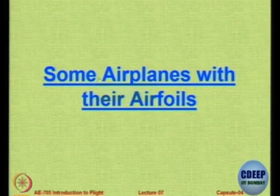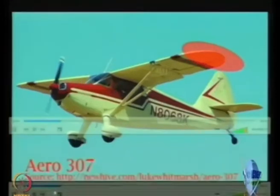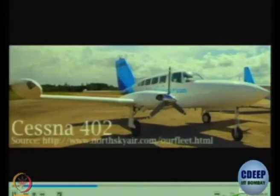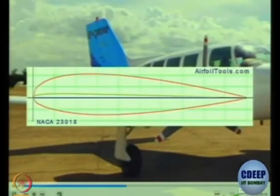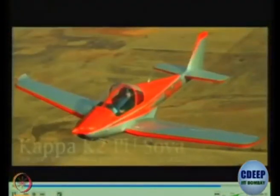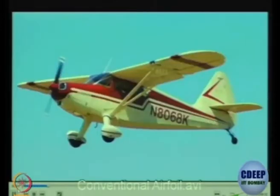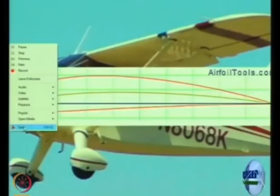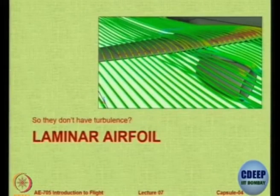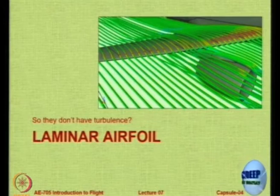Let us take a small look at some airplanes and their aerofoils. This is a video showing a few conventional aircraft — the NACA 5-series 23018, Italian Aermacchi, NACA 6-series, a popular aircraft for general aviation. Now we look at a certain class of aerofoils which are very special; one of them is called a laminar flow aerofoil, or to qualify, a Natural Laminar Flow (NLF) aerofoil.